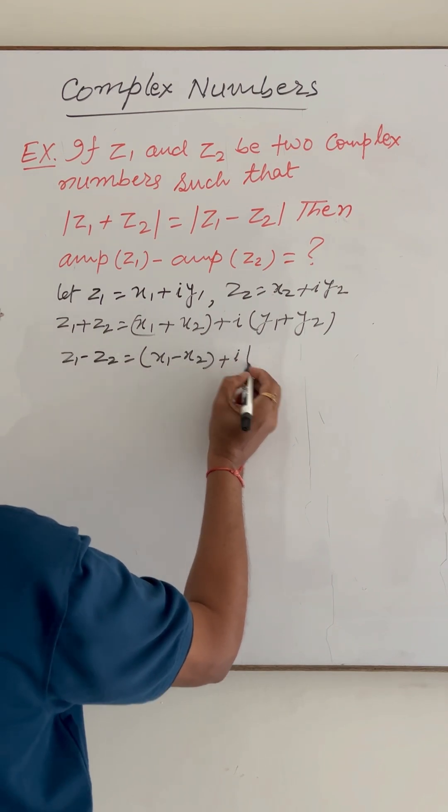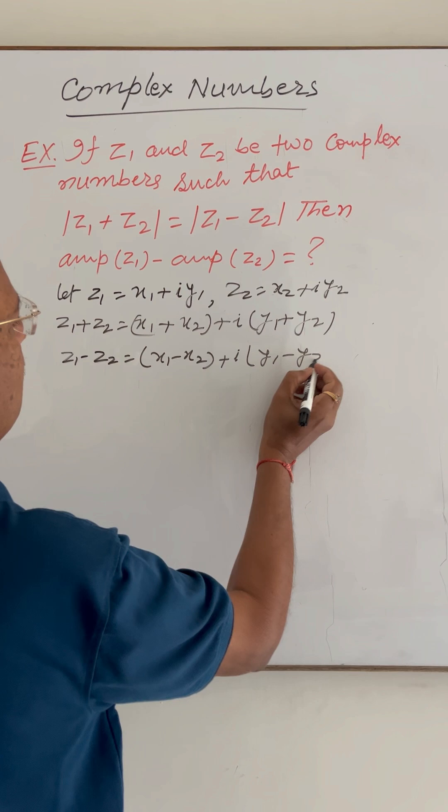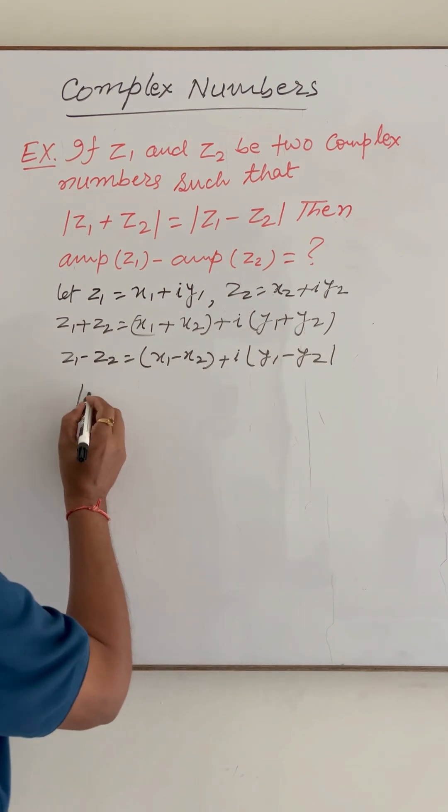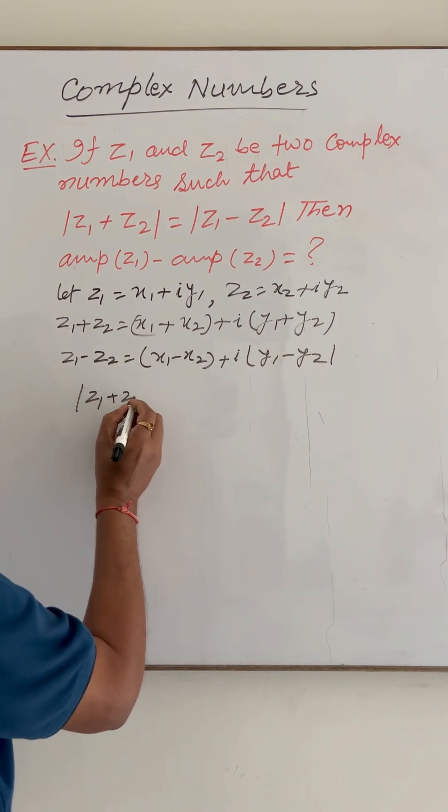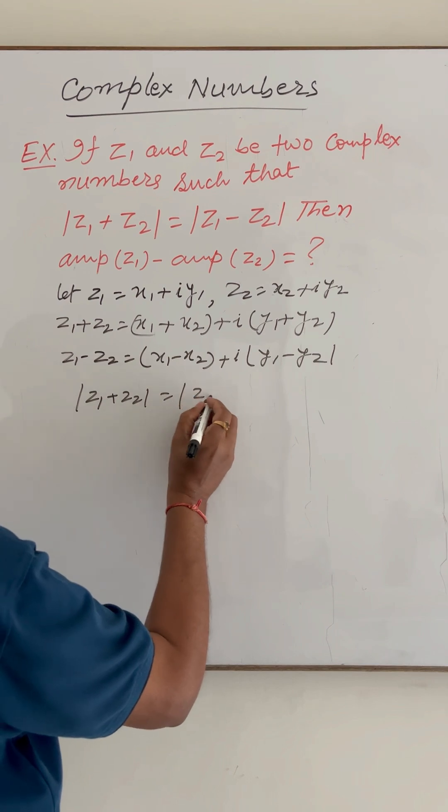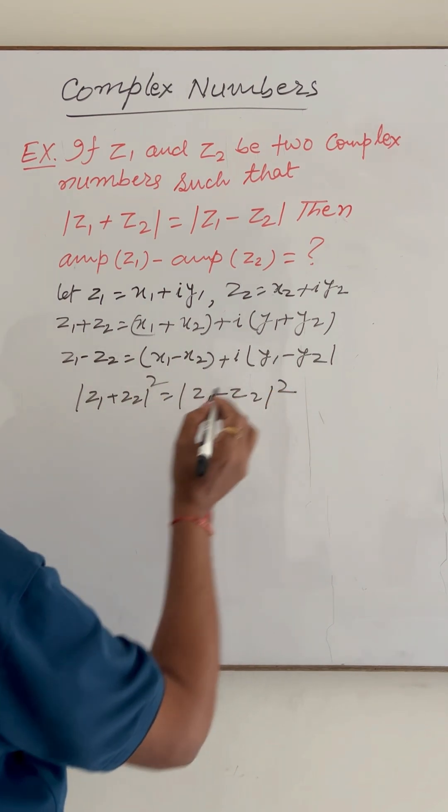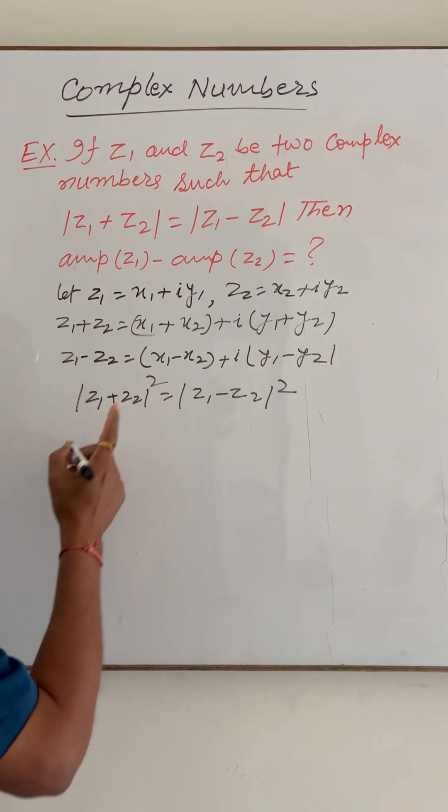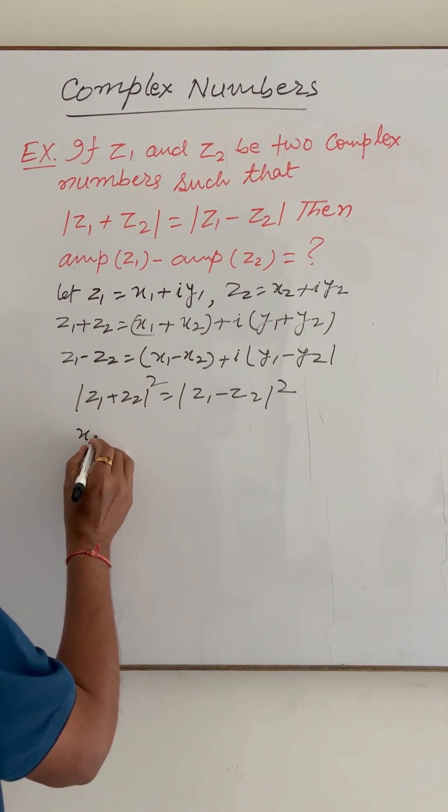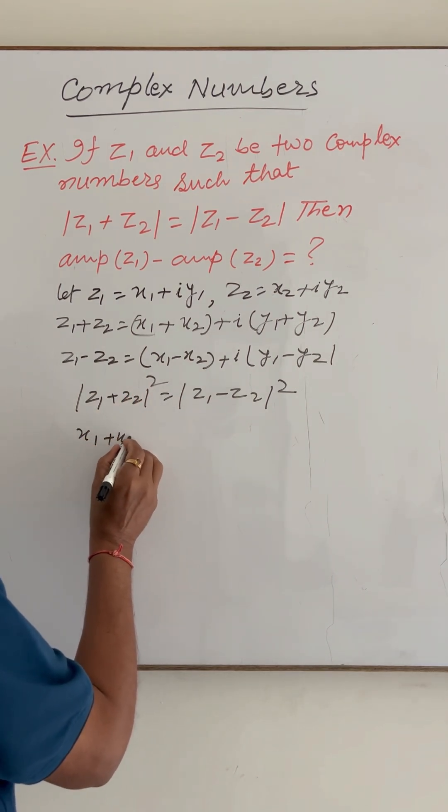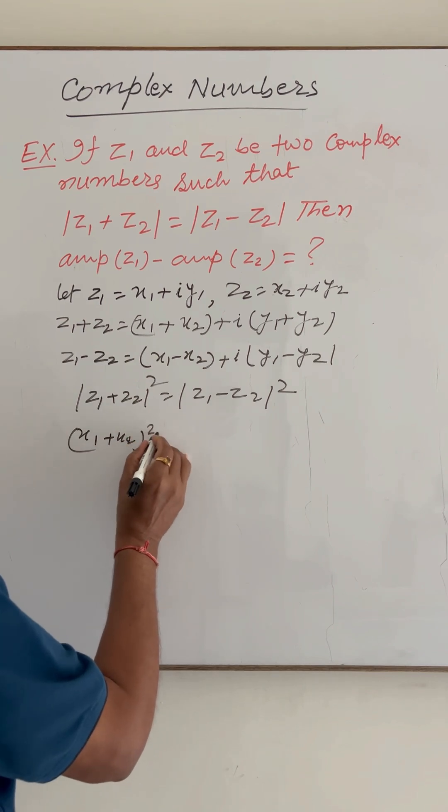Here given that mod of z1 plus z2 equals mod of z1 minus z2. Squaring both sides, mod of (z1 + z2) whole square is (x1 + x2) whole square plus (y1 + y2) whole square.